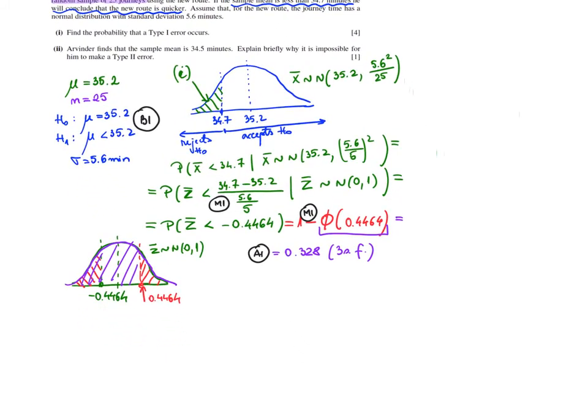So let's look at the second question. Arvinder finds that the sample mean is 34.5. Explain briefly why is it impossible for him to make a type 2 error. So let us remind that probability of a type 2 error is probability of accepting H0, given that H0 is false. However, if your x-bar is 34.5, it's already there. So according to his decision rule, he rejects H0.